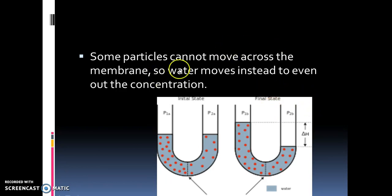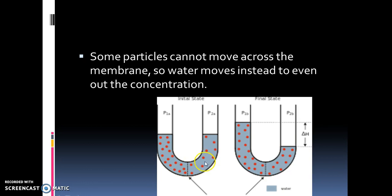On the left-hand side we have a lot of molecules, and on the right side not many molecules. The molecules would want to move from left to right, but they can't move across this membrane — the only thing that can move is water. So the water, in order to equal out the concentration, will move to the left to equalize the concentration on both sides. That is known as osmosis.